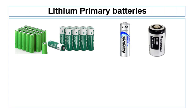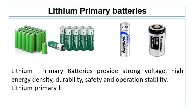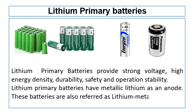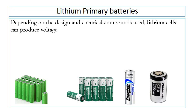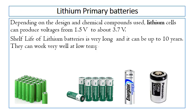Lithium primary batteries provide strong voltage, high energy density, durability, safety, as well as operation stability. Lithium primary batteries have metallic lithium as anode. These batteries are also referred to as lithium metal batteries. Depending on the design and chemical compound used, lithium cells can produce a voltage from 1.5V to about 3.7V. The shelf life of lithium batteries is very long and can be up to 10 years. They can work very well at low temperatures.